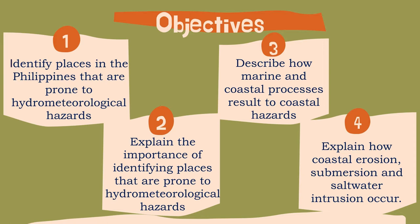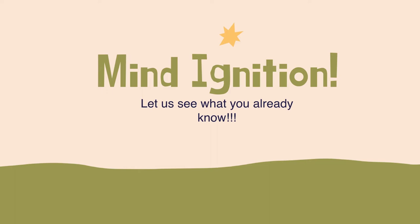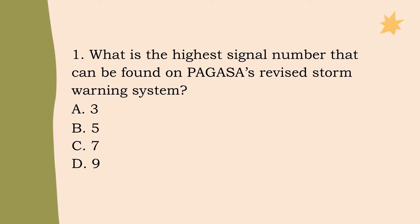Now let us check and ignite your previous knowledge regarding the lesson. Question number one: What is the highest signal number that can be found on PAGASA's Revised Storm Warning System? Letter A: 3, Letter B: 5, Letter C: 7, or Letter D: 9? The correct answer is Letter B, 5.